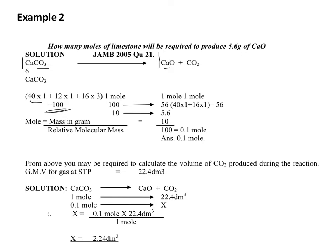For CaO, calcium is 40 and oxygen is 16. 40 plus 16 is 56. So you have that 100 grams of CaCO3 gives you 56 grams of calcium oxide, CaO.